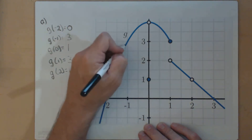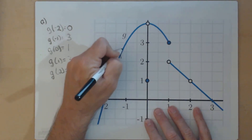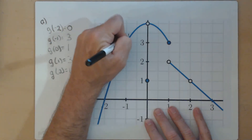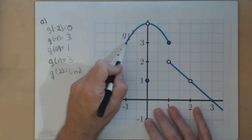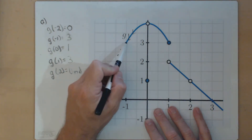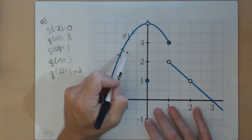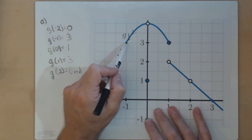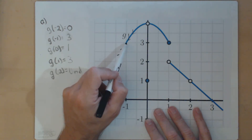So here's our input negative 1. We're going to look at what happens with our graph as we go into negative 1 from the left and from the right. We can see that our y values, or our outputs, are approaching 3. So as x gets closer and closer, but not equal to negative 1, g of x gets as close as we want to 3. So the limit of g of x as x approaches negative 1 is going to be 3.